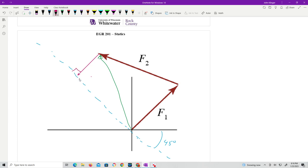That will give me the smallest resultant force F3, or smallest force F3 to give me a resultant force R in this direction.